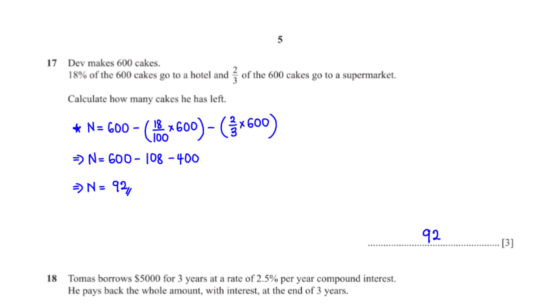Dev makes 600 cakes. 18% of the 600 cakes go to a hotel and 2 over 3 of the 600 cakes go to a supermarket. Calculate how many cakes he has left. To get this number, we subtract 18% of 600 and we also subtract 2 thirds of 600 from 600. When we type this into the calculator, we get 92.